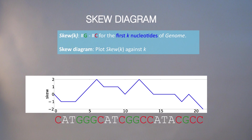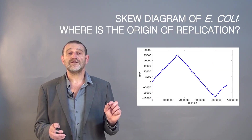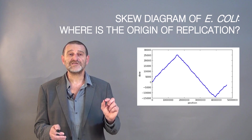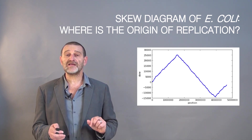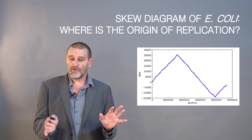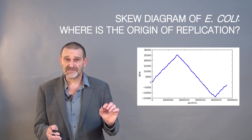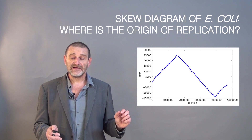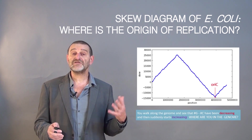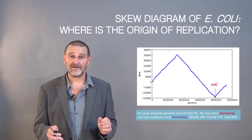Now let's construct a skew diagram for the E. coli genome. It looks beautiful. Where do we think is the origin of replication in E. coli — something that we almost had no hope to find? Of course it's at the point where the skew was decreasing and then suddenly starts increasing, which is here. We found the replication origin in E. coli.